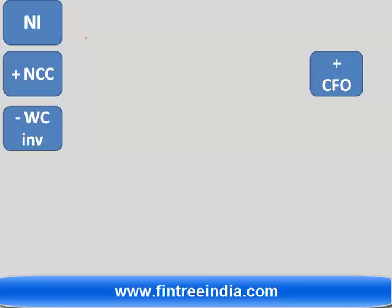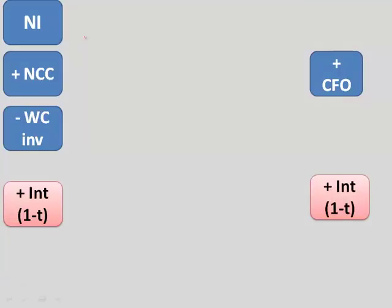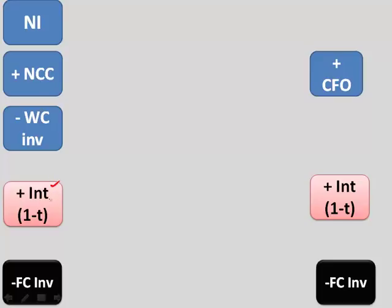And once you have CFO, then we have to make two important adjustments. One is that add back interest, because we had reduced it from net income, and we'll spend some time on discussing why we have to add back this net of tax and reduce the fixed capital investment. So these are your first two formulas for calculation of FCFF.